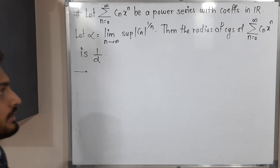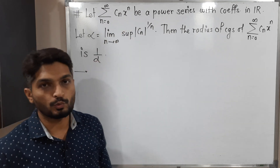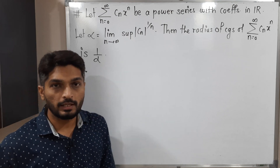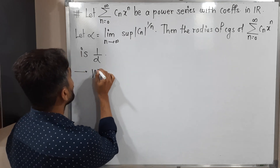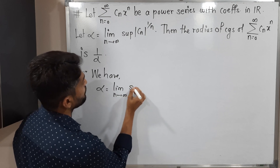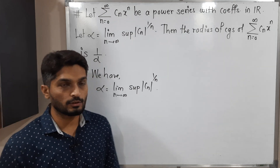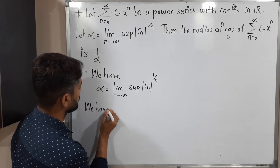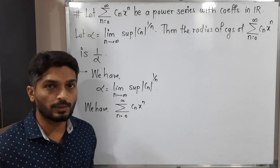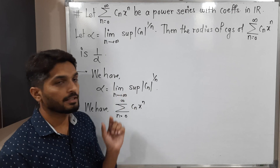In this video we are going to discuss the proof of this theorem related to power series summation cₙxⁿ. Alpha is defined as the limit supremum of |cₙ|^(1/n). We have the power series summation from n=0 to infinity of cₙxⁿ, and we have to prove that its radius of convergence is 1/α.